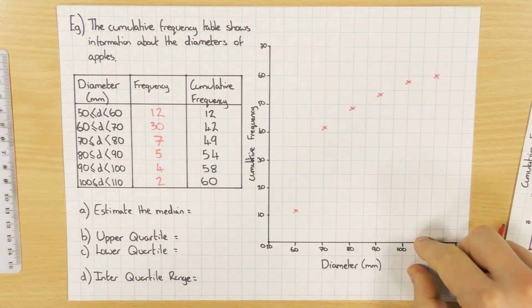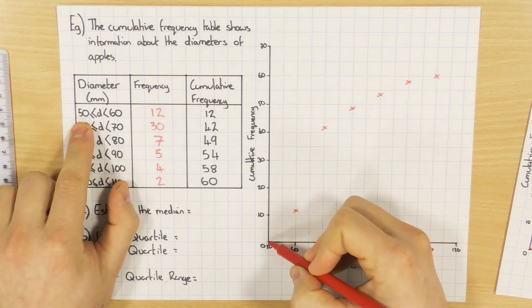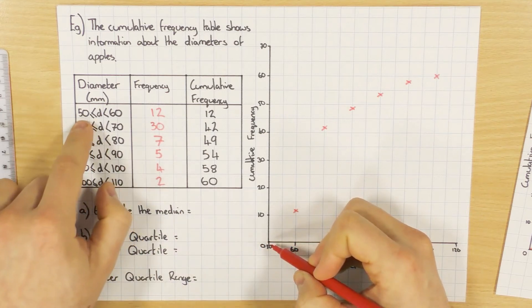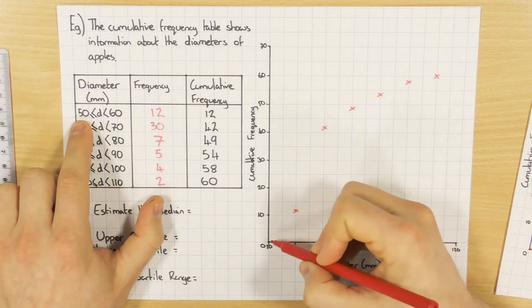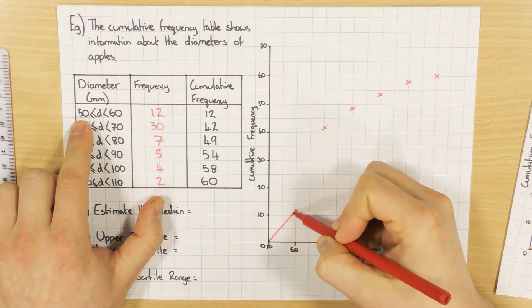So again, I haven't been told what the lowest value is, so I'm going to assume it's 50. So that's where I'm going to start at, at 50. If this was to go a bit further along, make sure you did start or do start at 50. And again, I'm going to try and draw a nice smooth curve going through each of the points.